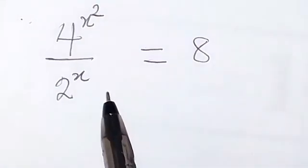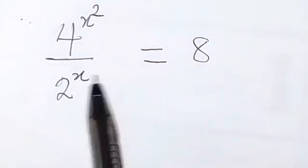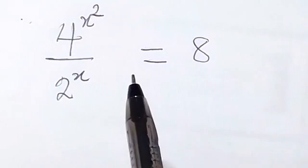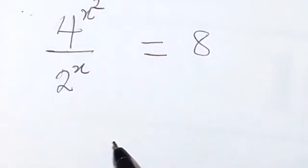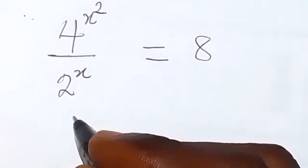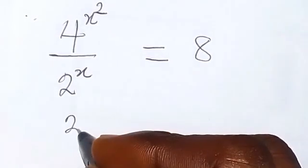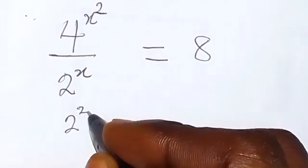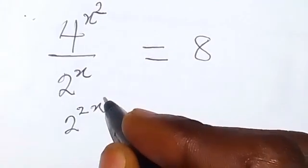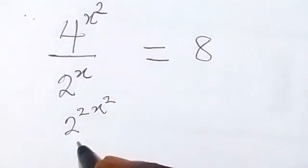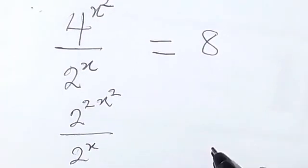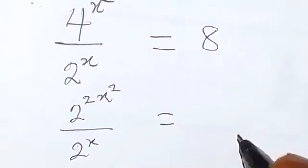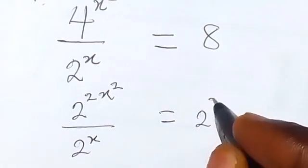We are finding the value of x. Therefore, let us change the numbers given here to have the same base. 4 can be expressed as base 2. Then we can write this as 2 raised to power 2x squared, that's 2x² divided by 2 raised to power x. Then equals to 8, which can be expressed as 2 raised to power 3.